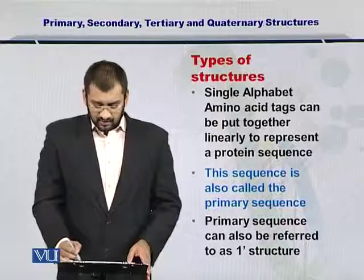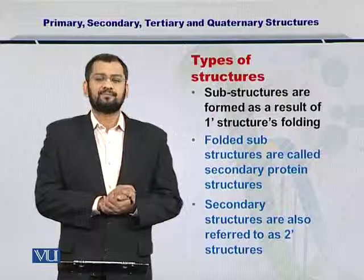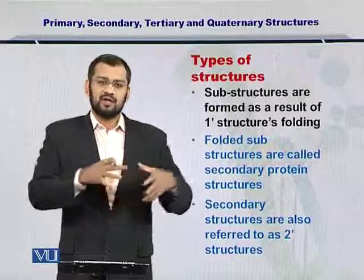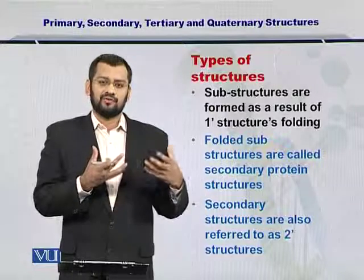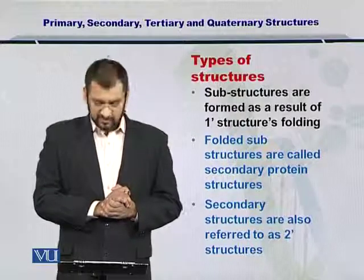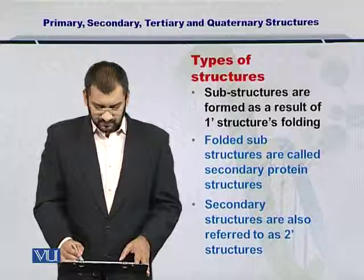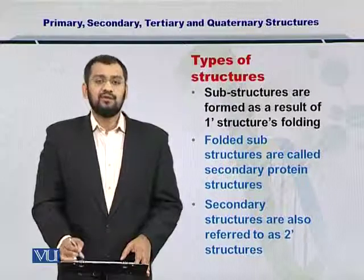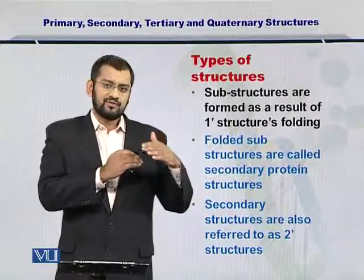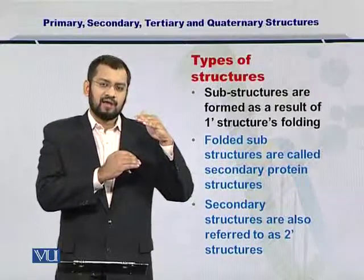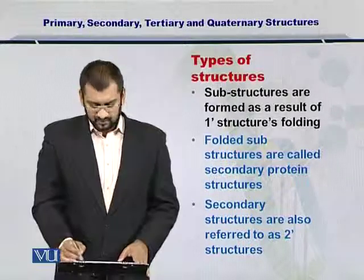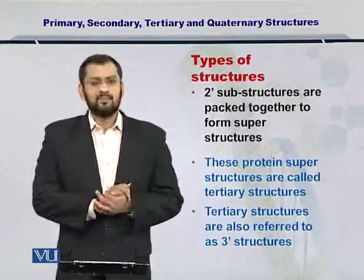Once the amino acids polymerize together, they create these substructures. The substructures arise out of the amino acid sequence and are called secondary structures, or the two prime structures. We have moved from the amino acid sequence to substructures, and now we are going to move from the substructures to the suprastructures or the tertiary structures.